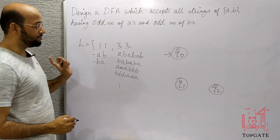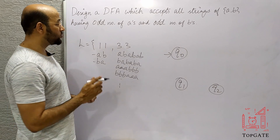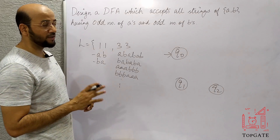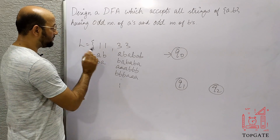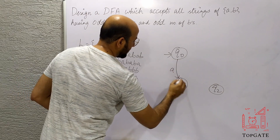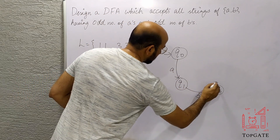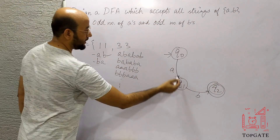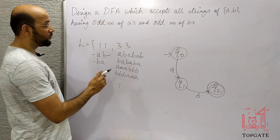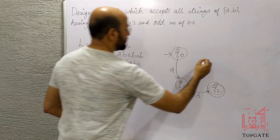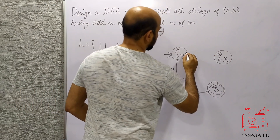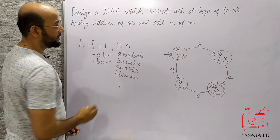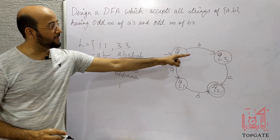We need inputs A and B. We cannot make Q0 the final state because we are not accepting epsilon in this language — if epsilon is not part of the language, the initial state cannot be the final state. So for A, B we go from Q0 to Q1 to Q2, making Q2 the final state — accepting string AB. For BA, we take one more state Q3, with transitions B then A, making Q3 also a final state — so both AB and BA are accepted.